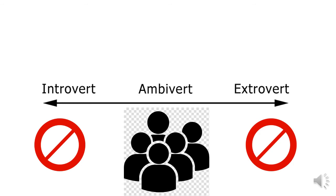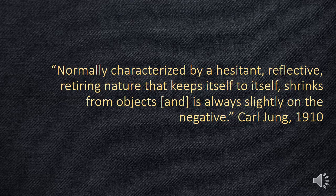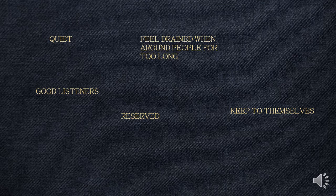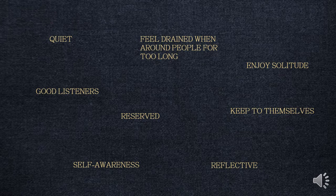Carl Jung described introversion as normally categorized by a hesitant, reflective, retiring nature that keeps itself to itself, shrinks from objects, and is always slightly on the negative. More generally, introverts are typically more reserved, quiet, keep to themselves, and are good listeners. They generally feel drained after being around people for a long time, enjoy solitude and being alone, are reflective and self-aware, and they learn by observing before actually attempting to implement what they are learning. Typically, introverts need time alone and tend to interact with few people.